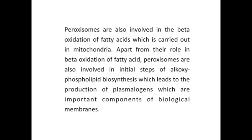Peroxisomes are also involved in the beta-oxidation of fatty acids, which is also carried out in mitochondria. Apart from their role in beta-oxidation of fatty acids, peroxisomes are also involved in the initial steps of alkyl phospholipid biosynthesis which leads to the production of plasmalogens, which are important components of biological membranes. Peroxisomes play an important role in photorespiration of plants. In this process, glycolic acid, a 2-carbon product of photosynthesis released from the chloroplast, is oxidized by the enzyme glycolic acid oxidase present in the peroxisomes, leading to the production of hydrogen peroxide which is degraded by catalase inside the peroxisomes.